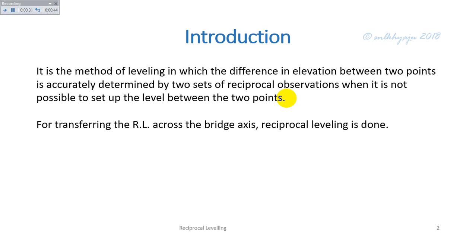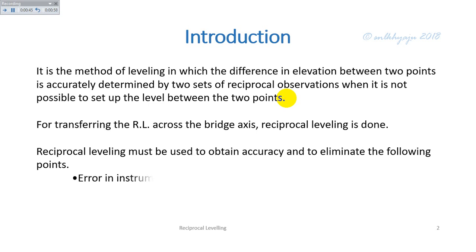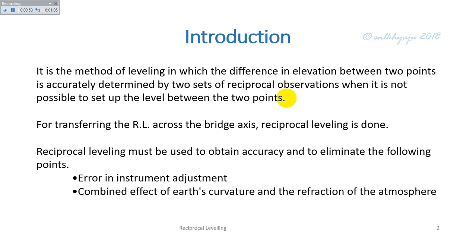For transferring the RL across the bridge axis, reciprocal leveling is done. Reciprocal leveling must be used to obtain accuracy and to eliminate the error in instrument adjustment, combined effects of earth curvature and the refraction of the atmosphere.